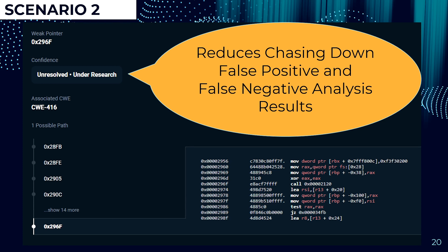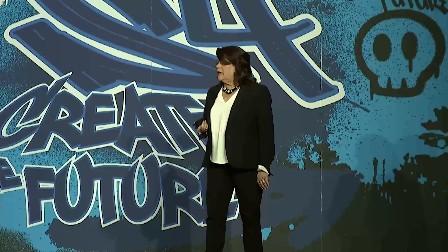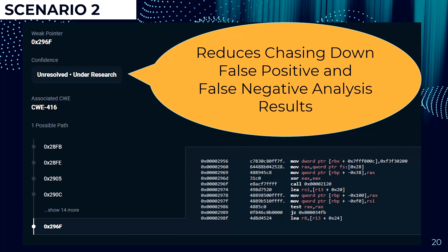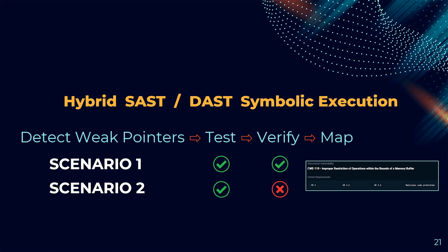Scenario two: running through another firmware image, a weak pointer was found along with one possible path to it. But through the symbolic AI, we are not certain that this is one that can or should be remediated, because there's a possibility of a false positive associated with it. This helps with prioritization: if you're finding weak pointers, finding paths to them, knowing about known exploits, and seeing the weakness in code — but the symbolic AI cannot verify it — you will automatically prioritize scenario one over scenario two.